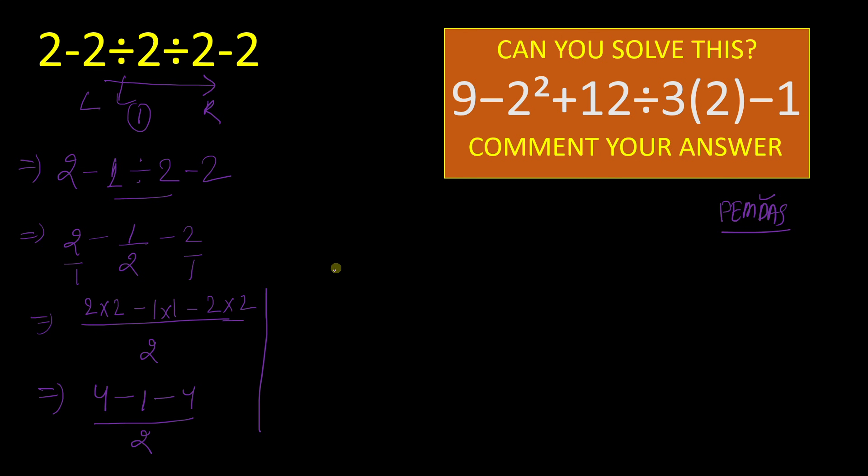So we can write 4 minus 1 will give result here. 3 minus 4 divided by 2, and ultimately minus 1 by 2. This is the right answer. And moving to the next question.